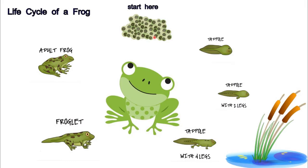Their life cycle looks something like this: eggs are laid in an aquatic setting — frogs and toads lay their eggs a little differently from each other, and so do salamanders. Those hatch into tadpoles that look somewhat like fish but without pectoral fins, swimming around eating mostly decaying plant matter, though that varies by species. Some species are tadpoles for only a few days; others remain in the larval stage for over a year.